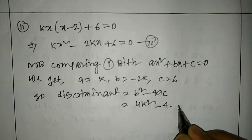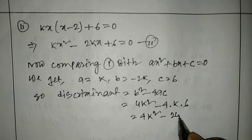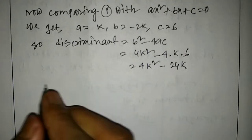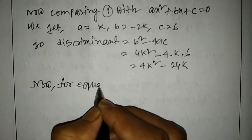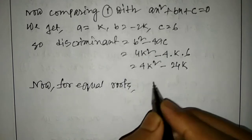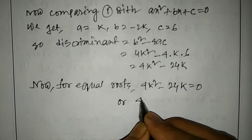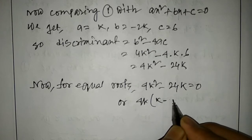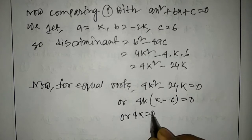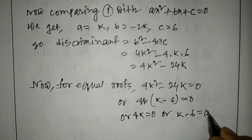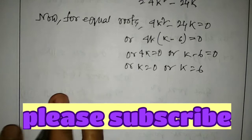The discriminant is b squared minus 4ac, which is 4k squared minus 4 into k into 6, giving 4k squared minus 24k. For equal roots, 4k squared minus 24k equals 0, or 4k(k minus 6) equals 0, so k equals 0 or k equals 6.